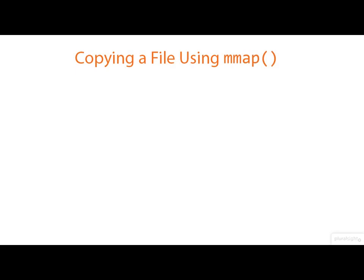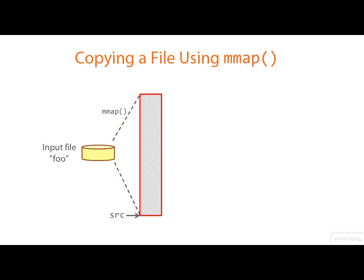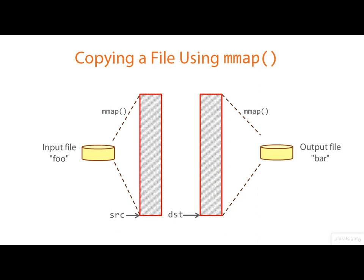To make clear what's going on: we start off with an input file foo, we mmap it into memory capturing the address of the mapped block in src. Similarly, we have the output file bar — we mmap that into memory capturing the address of the mapped block in dst. These two shaded rectangles represent the in-memory buffers. Then we do a memcpy between the two buffers, and finally we do an msync to push the destination buffer back out to the file.